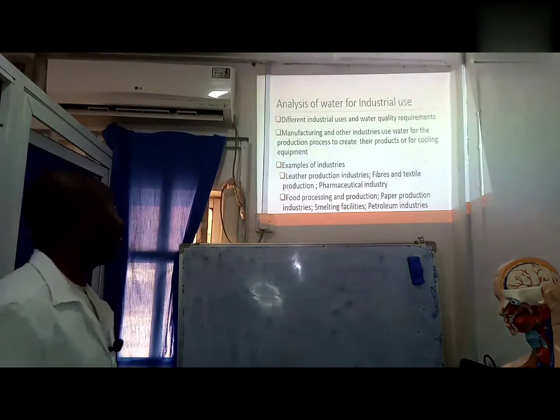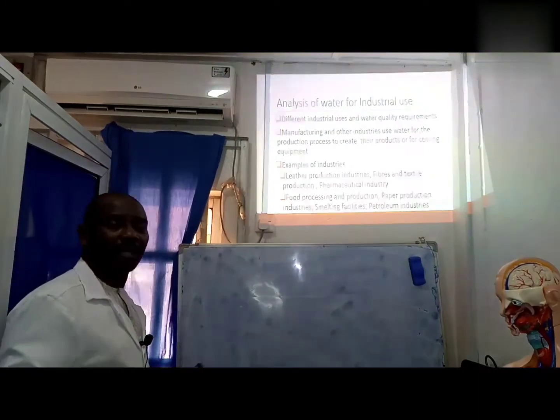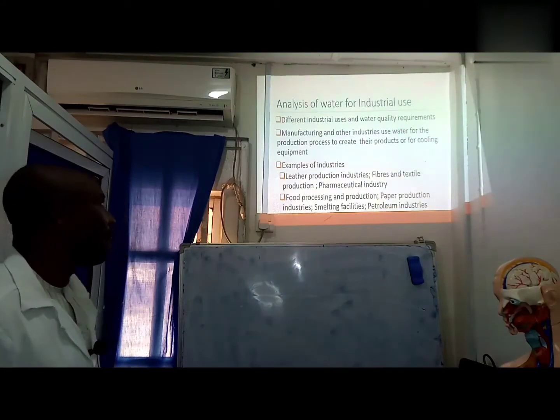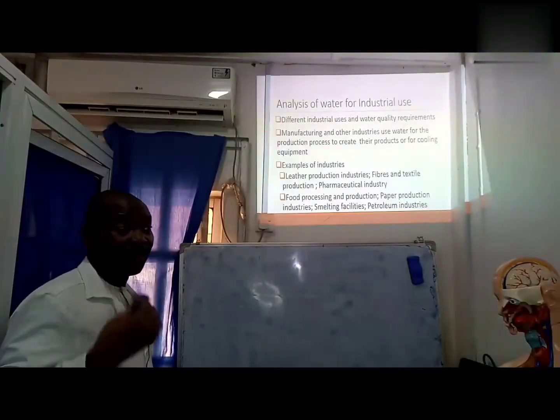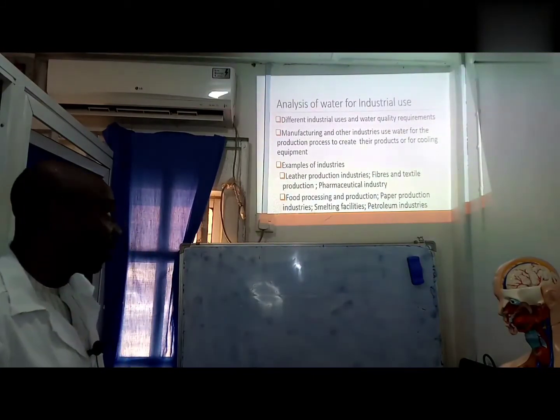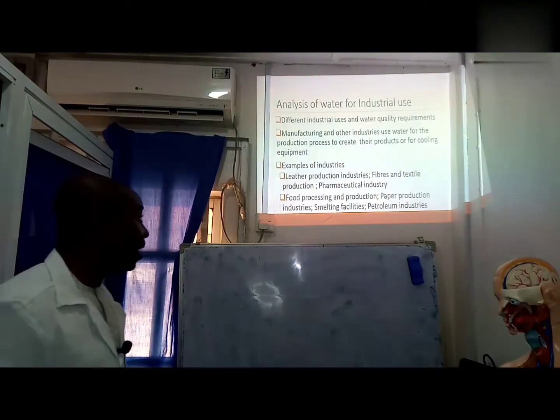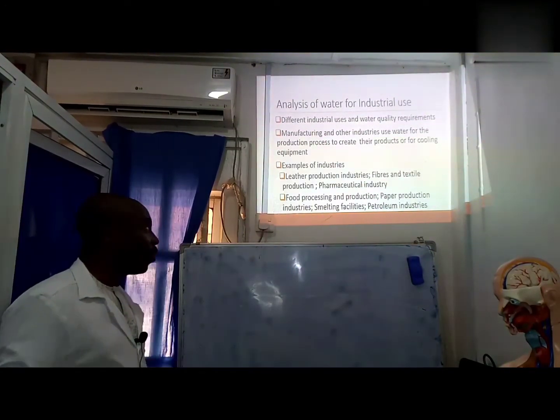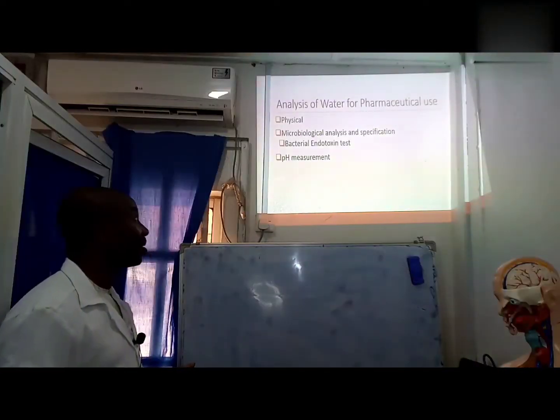Water for industrial use: different industries use water for different purposes, and the requirements they have for water are also different. Manufacturing and other industries use water for production; some use it for cooling of their equipment. Examples of industries that use water include leather production, fibers and textile, pharmaceutical, food processing and production, paper production, smelting, and so on. We are going to pay more attention to the pharmaceutical industry, where this seems to have more stringent conditions and requirements.